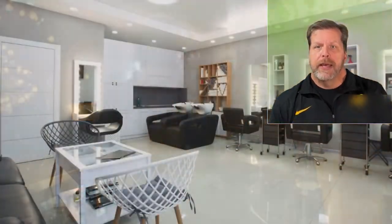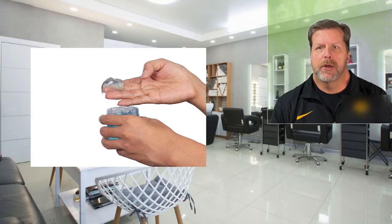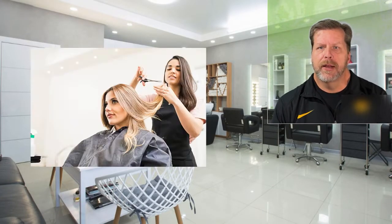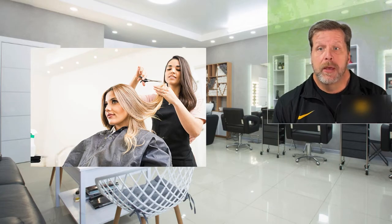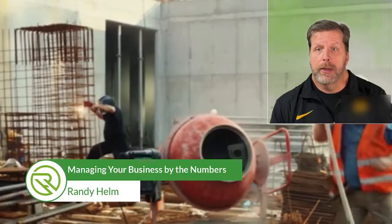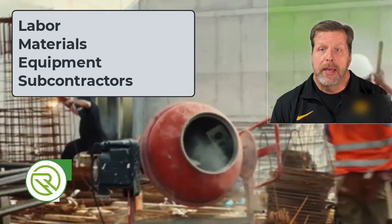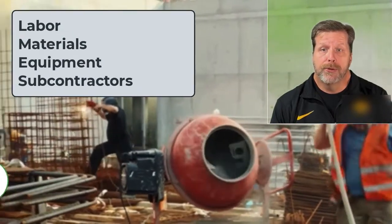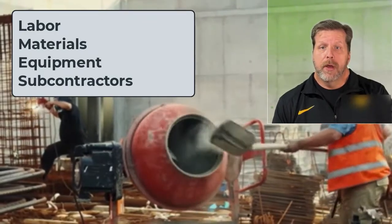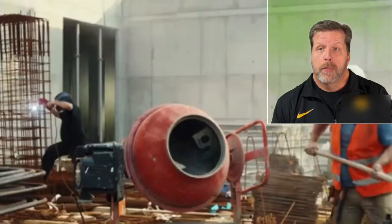If you run a hair salon, each service has a cost for the products used in the service, as well as the labor cost of the stylist that performs the service. If you have a construction company, you likely have several cost categories, including labor, materials, rented equipment, owned equipment, and even subcontractors. Each has different cost structures and could yield different rates to the customers.